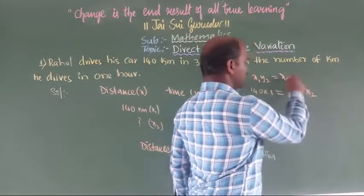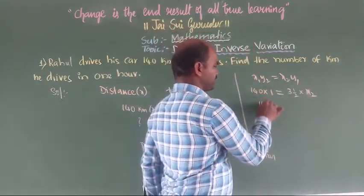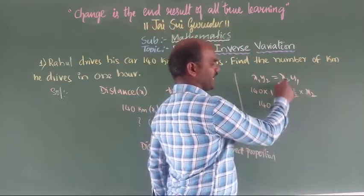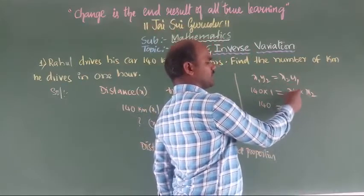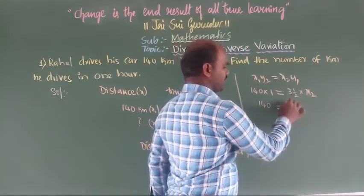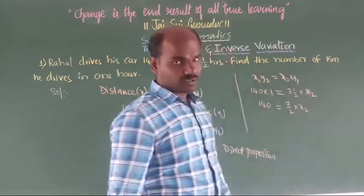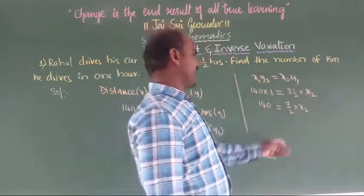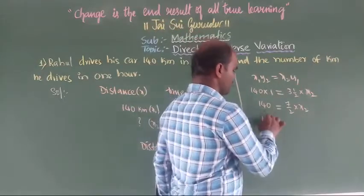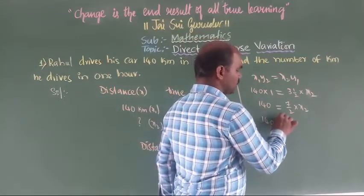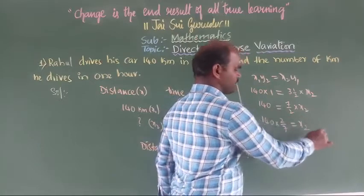So x2 equals 140 × 1, and we need to find x2. That gives us 140 = 7 by 2 into x2. Transposing 7 by 2, it becomes 140 × 2 by 7 = x2.